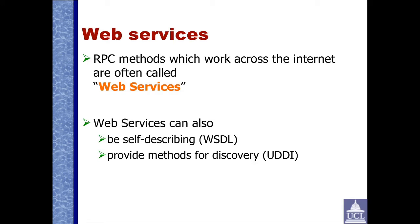Remote Procedure Calling methods that work across the internet are often referred to as web services. There's an awful lot of technology available behind web services, and this allows them to be self-describing. There's a language called WSDL, which allows a web service to describe what functionality it has and how to call it — in other words, it describes its own API. Web services can also provide methods for discovery, like a directory of services. However, in the main, they're not done like that these days. This was a desire people had for making web services really pervasive, but because it was rather complicated, it never really caught on in the way that it might have done.